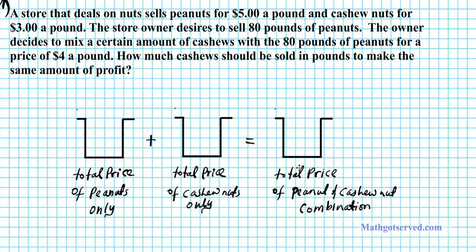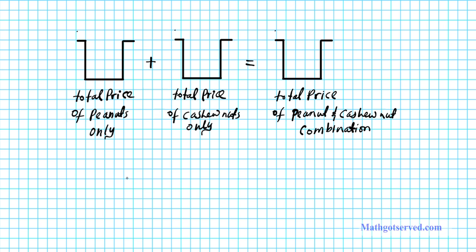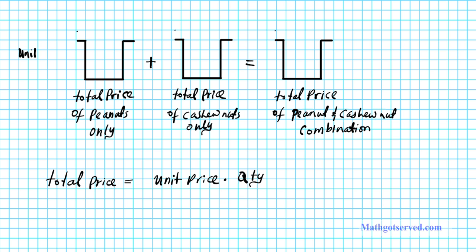So this is the basic setup. Now, the equation for calculating the total price is as follows: total price equals unit price multiplied by quantity. We're going to populate our buckets using this formula, so each bucket will have a unit price and a quantity.